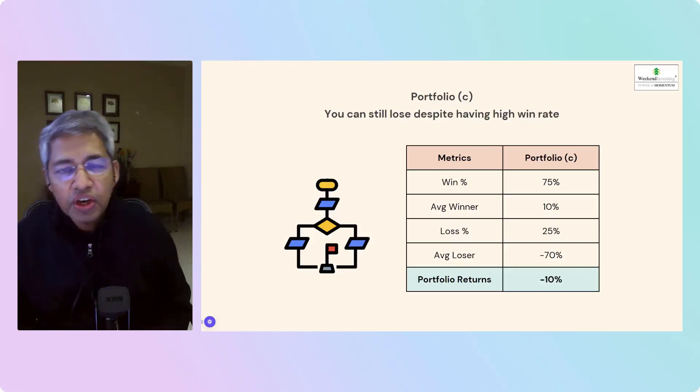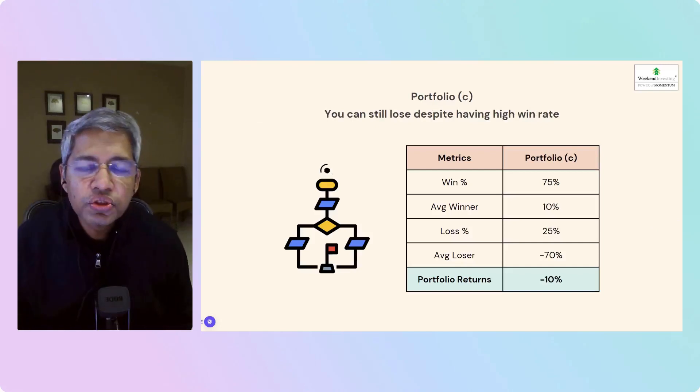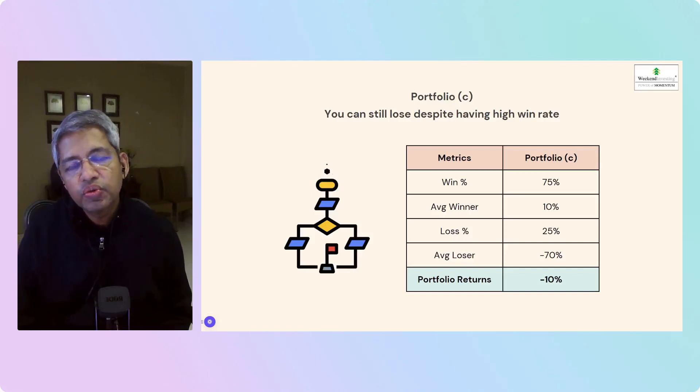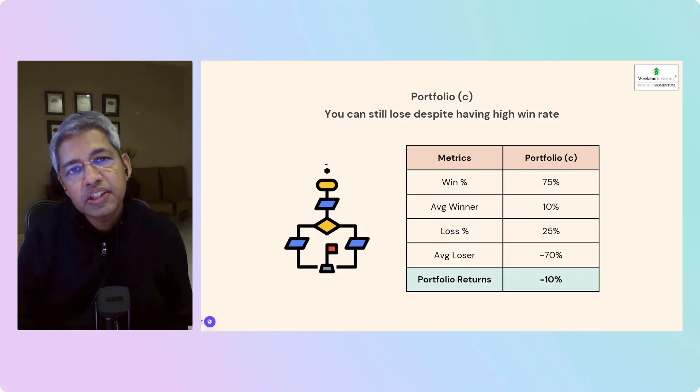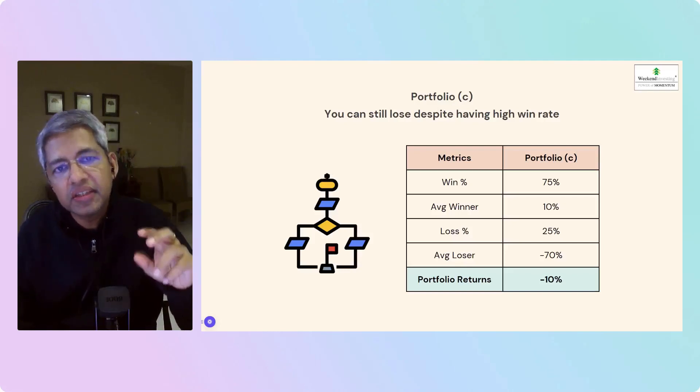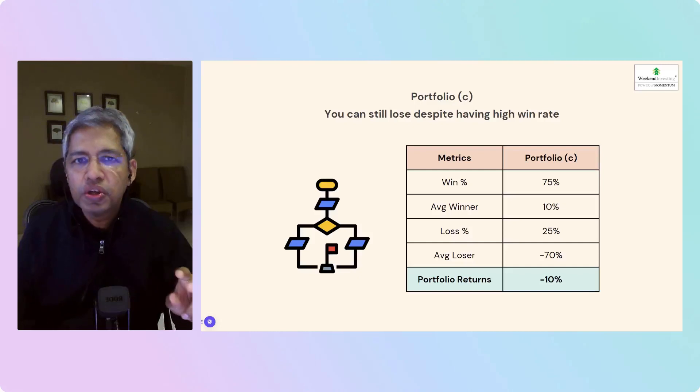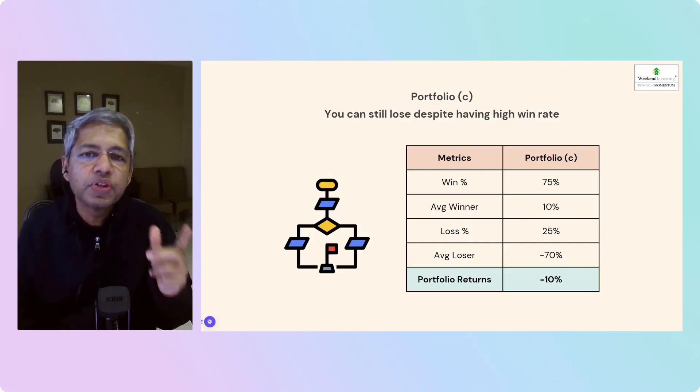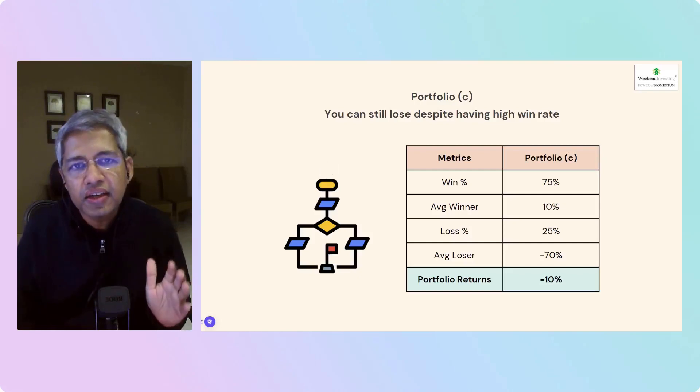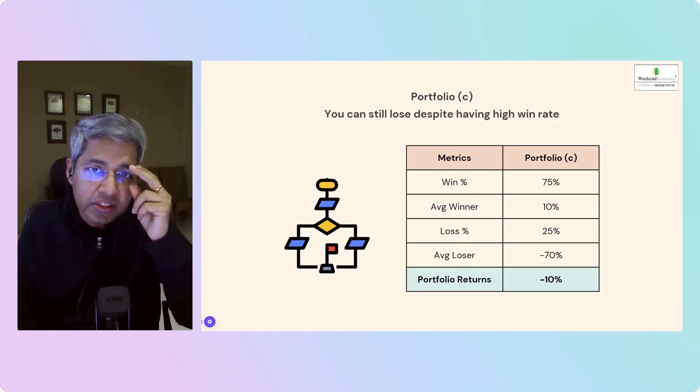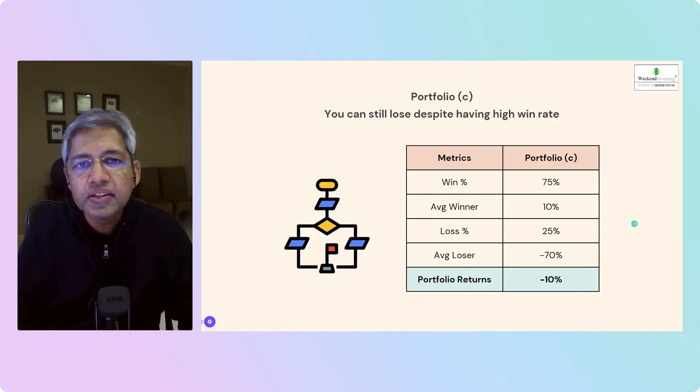Portfolio C: you have very high winning rate, so you have 75% probability of a win, 25% probability of a loss, very nice. But whenever you are winning you are winning 10% only, and whenever you are losing you're losing 70%. Portfolio C is the most common portfolio out there. Yes, you are winning a lot of times but you're panicking early, you are not allowing your winners to run. You're getting out at 10%, but once the stock starts to go down you are looking at it like a deer in the headlights. Average loser 70%, average winner 10%, overall portfolio return minus 10%.